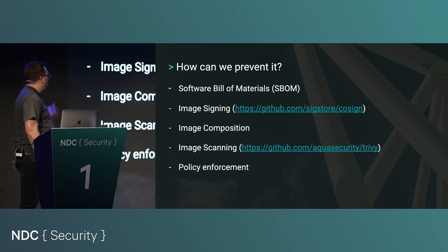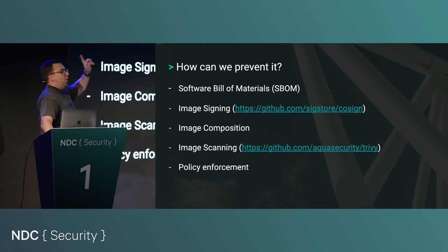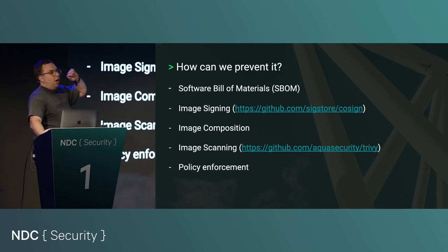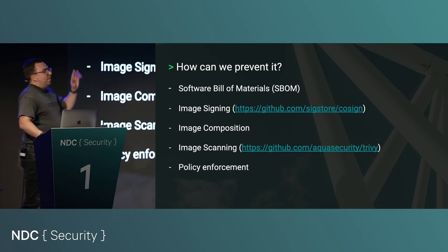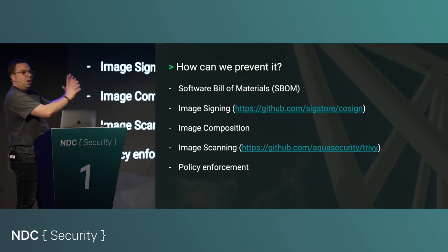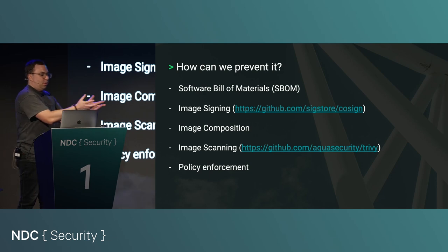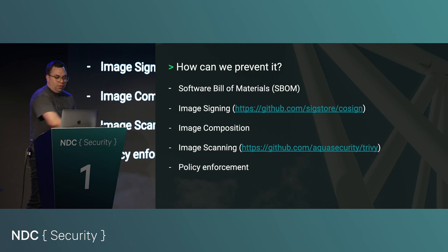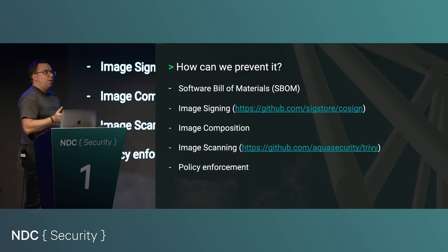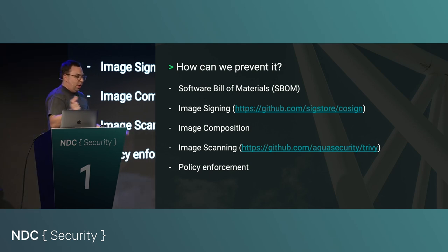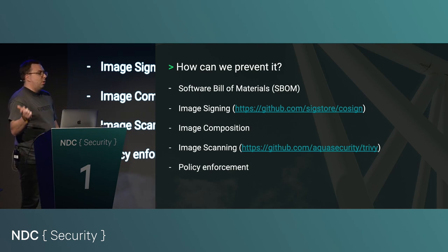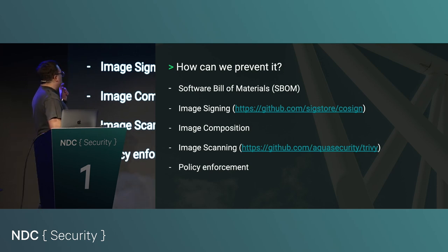Image composition: hands up if you're running Docker using an image like Ubuntu, Debian, or CentOS as your base. Have you seen how many vulnerabilities those have on their own? Do you truly need a full CentOS operating system to run your binary? Probably not. If I get inside your pod running a full-fledged OS, I've got curl, wget, everything by default. When we talk about image composition, I mean just enough — just enough for my image to run and nothing else.